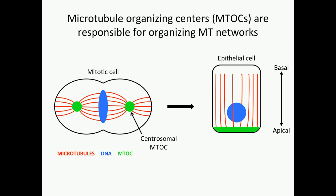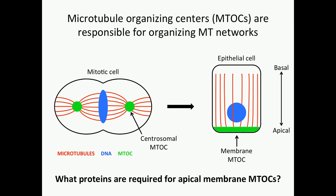The centrosome is the canonical MTOC, giving rise to the radial array of microtubules we see in a dividing cell. But other structures can take over the role of MTOC, including the apical membrane in epithelial cells after differentiation. We know a lot about centrosomal MTOCs, but we know very little about the non-centrosomal MTOCs, including simple questions like what proteins are required for establishing those sites.